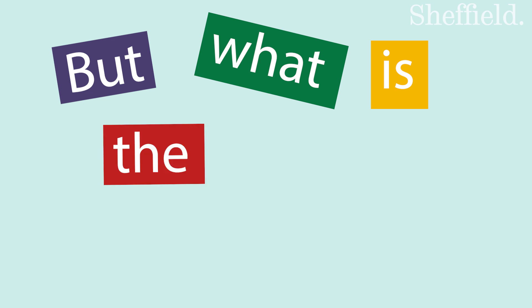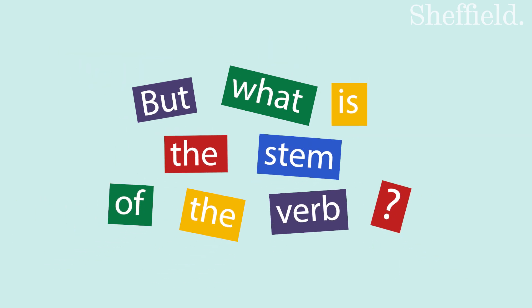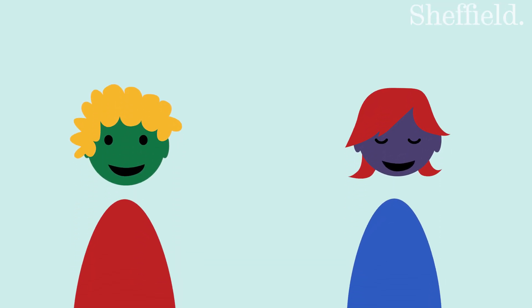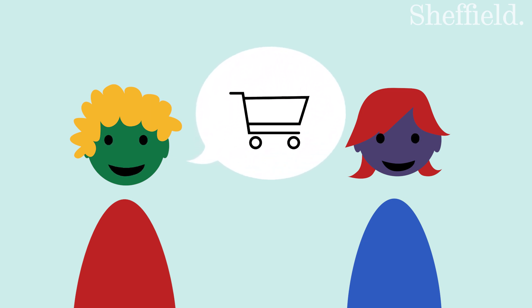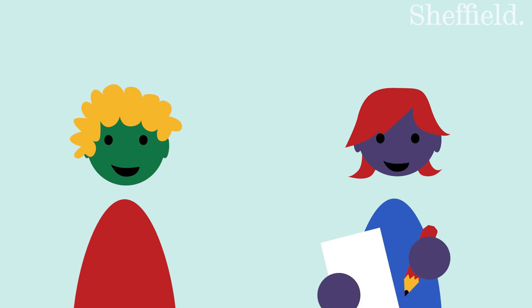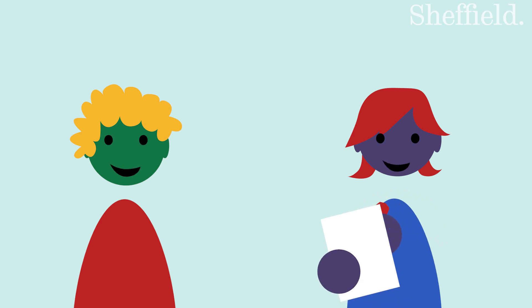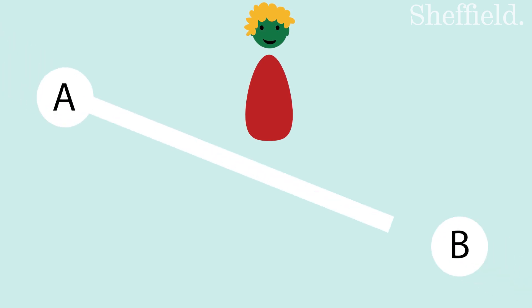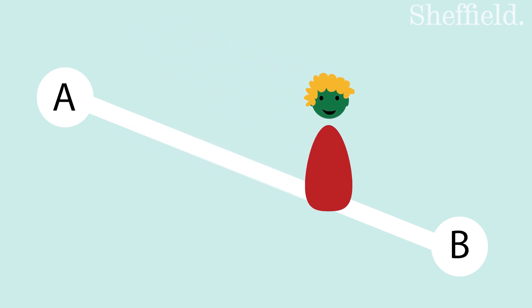But what is the stem of the verb? Here comes a rule: the stem is the full verb without the -en. That's very simple when you just say the words. For example, the verb kopen has the stem koop, and the verb hollen has the stem hol — just chop off the -en ending. However, when you have to write them down, we have to take a few spelling rules into account. Dutch is quite logical and consistent when it comes to spelling, so follow the rules and you will get the correct answer.